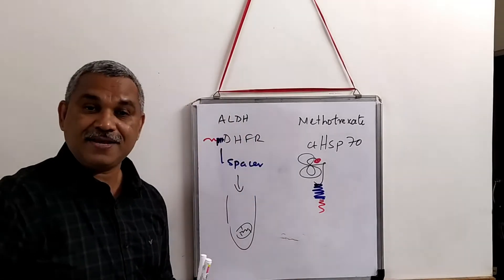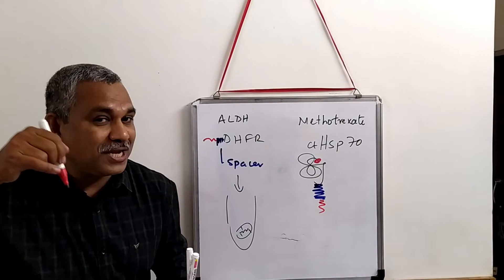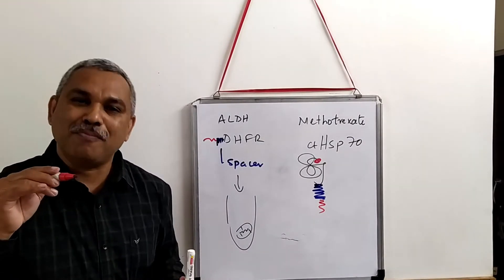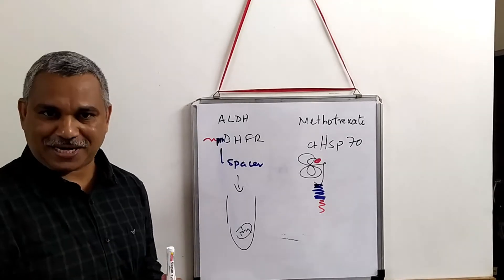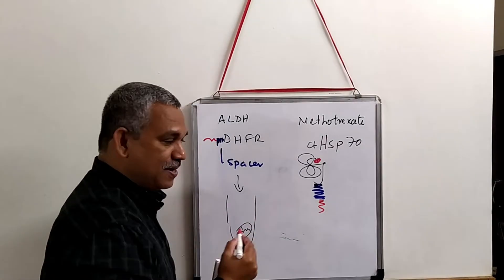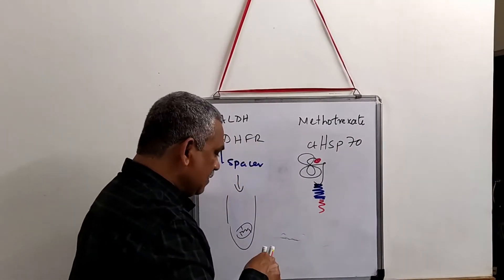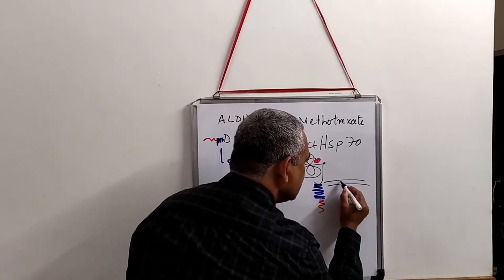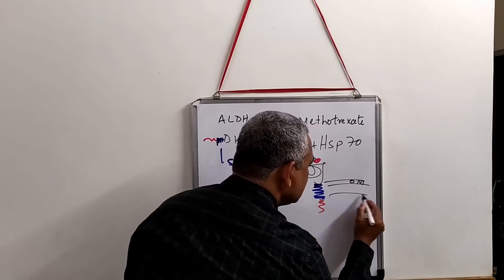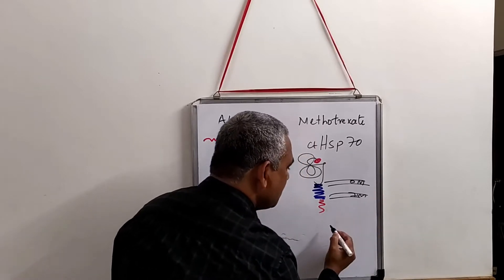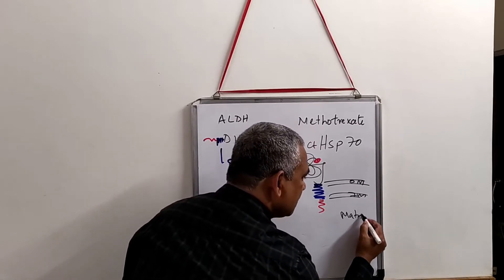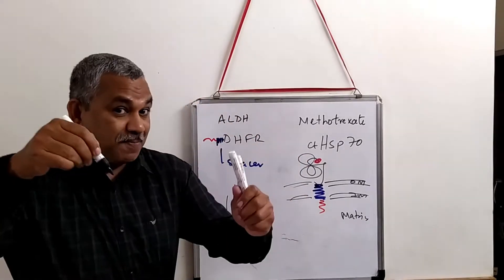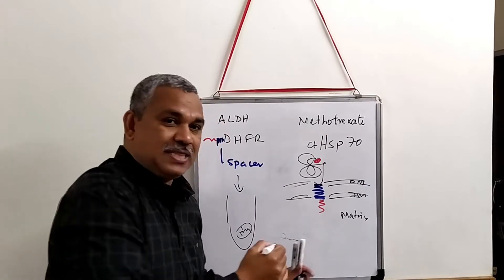This protein is allowed to migrate into the mitochondria. Consider that this is the outer membrane and this is the inner mitochondrial membrane, and this is the matrix. The spacer is there, and once the signal is inside, the signal will get cleaved by a protease.